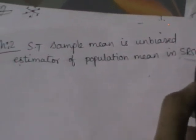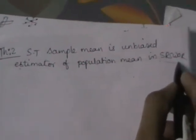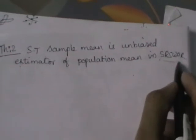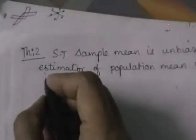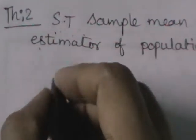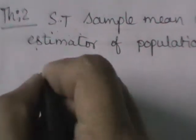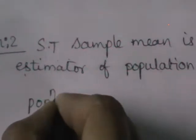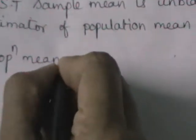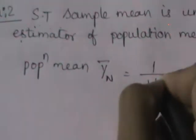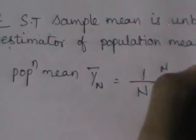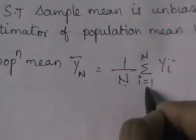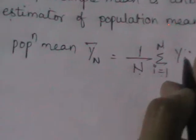In examination, you should check whether it is simple random sampling or stratified random sampling. Before going to prove this, let us recall the notation which we have used for population mean and sample mean in SRS. Population mean we indicate with Ȳ_N, which is nothing but 1 by N, sigma i equals 1 to N of y_i. Please take out your notation page from your notes.